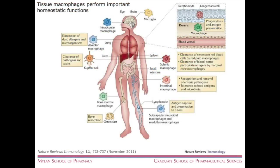We have macrophages throughout our body. For example, in the liver we have Kupffer cells, important for removing toxins and pathogens — and these also pick up many nanomedicines once injected IV. In the lung we have alveolar macrophages that eliminate dust, allergens, and microorganisms. We also have macrophages in the spleen, intestine, and lymph nodes. Macrophages and that cell lineage are throughout the body and have a variety of homeostatic functions. We are interested in modulating macrophage behavior, not necessarily removing macrophages.